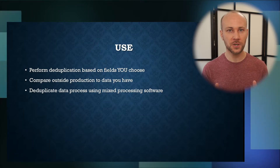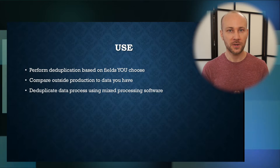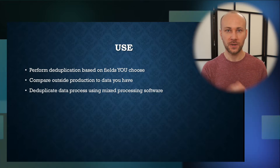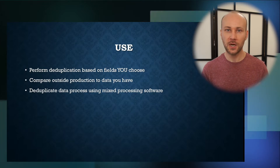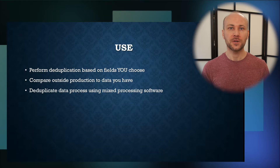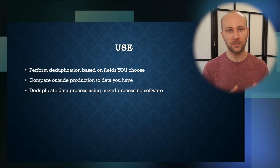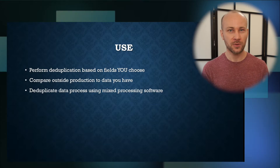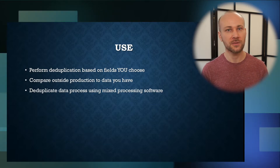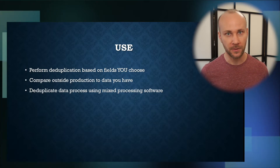If you receive outside production and you want to know if you already have these or similar documents, you can use this tool to generate a hash value on your existing data as well as the outside production and compare the two. And lastly, you can use this to perform deduplication on data that was processed in different processing software, because different software may generate a hash a little bit differently based on the order fields were fed into the hashing algorithm.